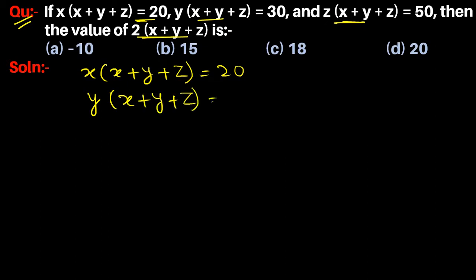= 30, and z(x + y + z) = 50. Now adding them, the common term in these 3 equations is (x + y + z), so we